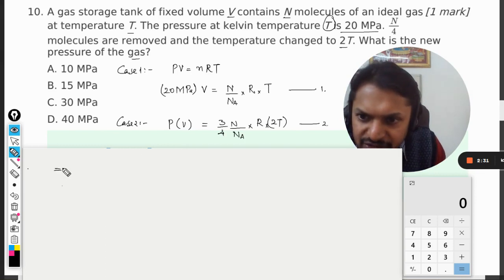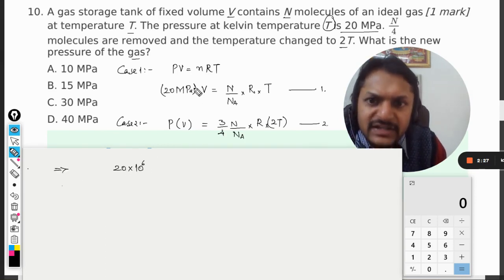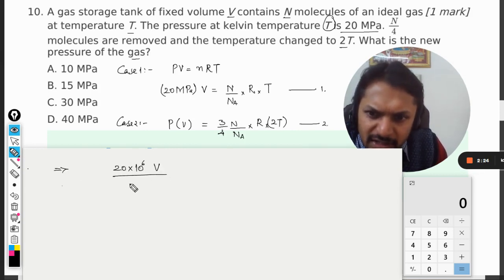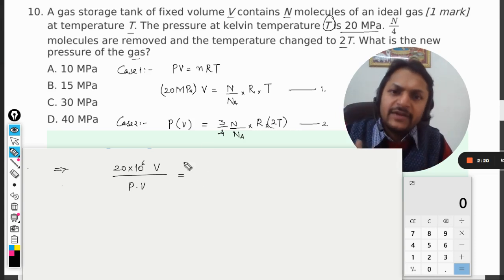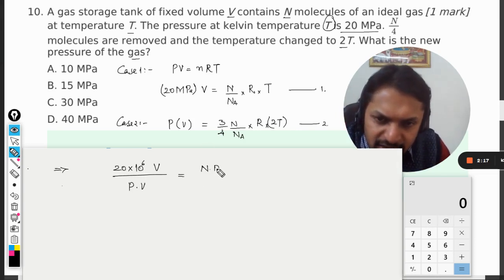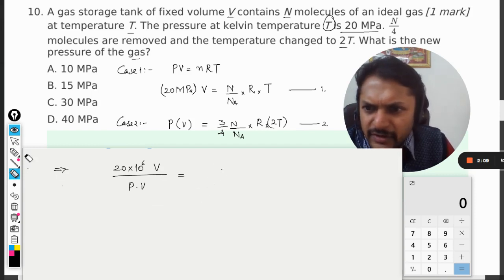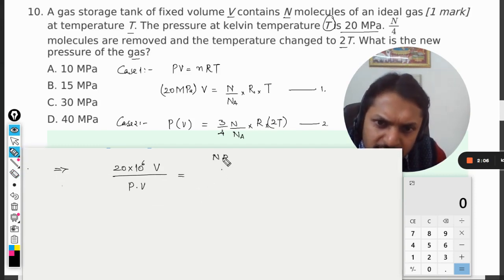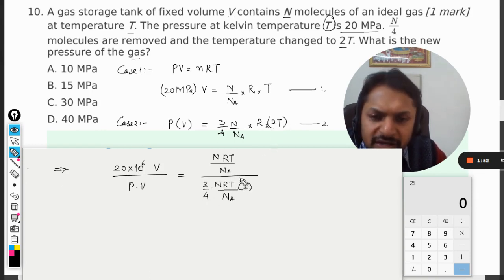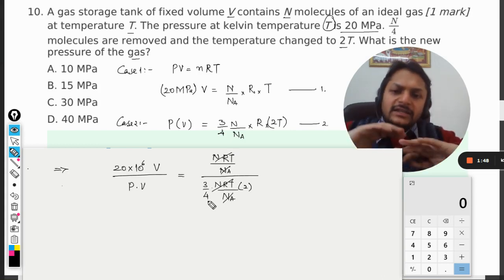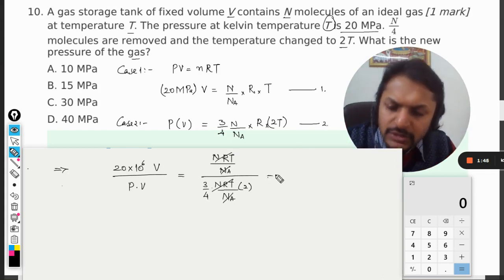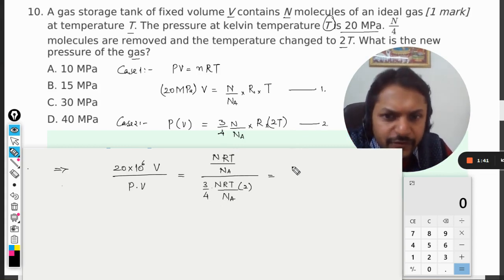So I can write 20 MPa divided by PV on the left-hand side, and this is N × R × T divided by NA on the right. We can write it the other way also. N R T divided by NA divided by 3/4 N R T divided by NA, and 2 will be extra here. So these things are getting cancelled out, and it is getting reciprocals. Be very careful for the math.